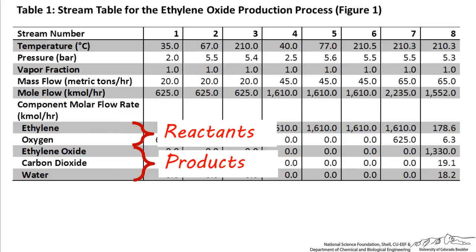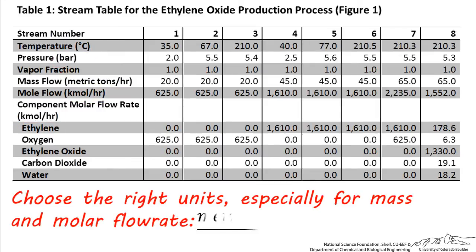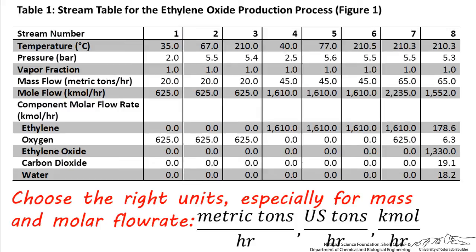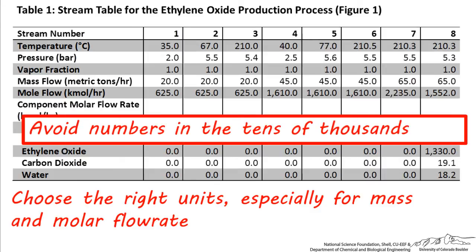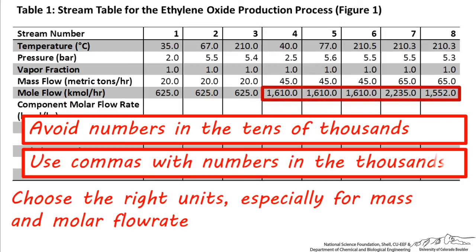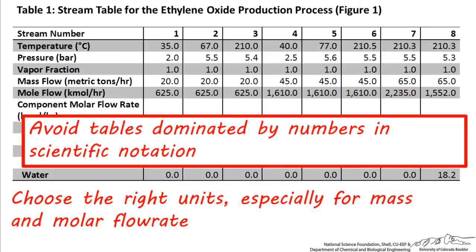Another thing that helps create an easy-to-read stream table is to choose the right units, especially for mass and molar flow rate. Using metric tons per hour, US tons per hour, or kilomoles per hour for most large chemical processes is a good way of making sure you have numbers that are around one to four digits. You want to avoid numbers that are in the tens of thousands or larger, as this crowds a table and makes it very difficult to read. If you do have to present numbers in the thousands range, be sure to use commas to help make them easier to read. Also, try to avoid having a table which is filled with numbers all in scientific notation. Remember that these guidelines are much easier to follow if you just choose units which result in smaller numbers.